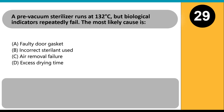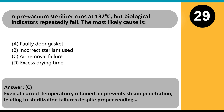A pre-vacuum sterilizer runs at 132°C, but biological indicators repeatedly fail. The most likely cause is: A. Faulty door gasket. B. Incorrect sterilant use. C. Air removal failure. D. Excess drying time. Answer: C. Even at correct temperature, retained air prevents steam penetration, leading to sterilization failures despite proper readings.